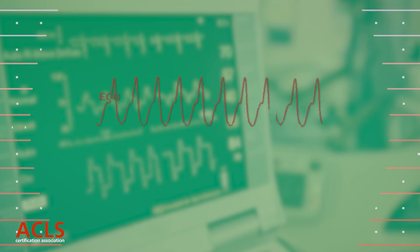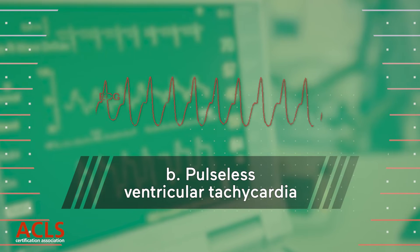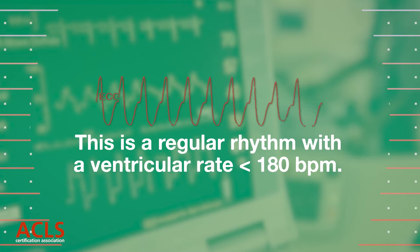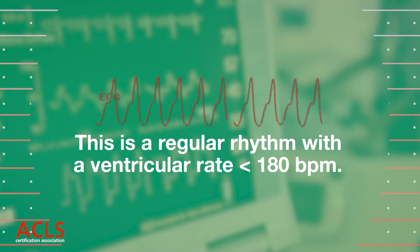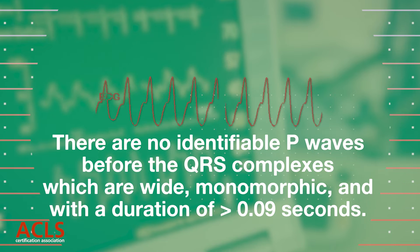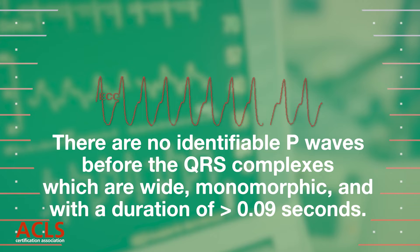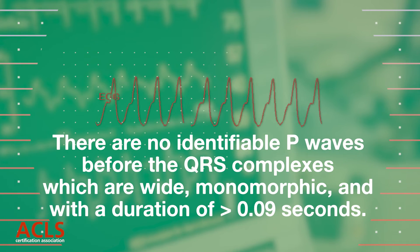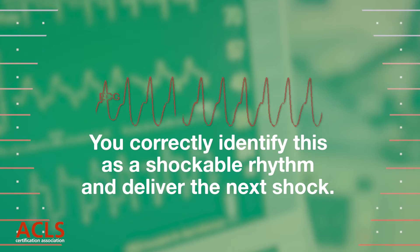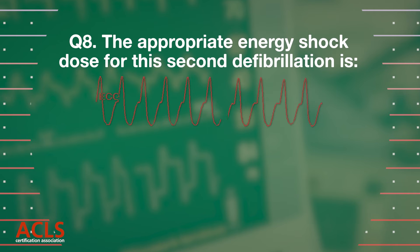Correct answer: B) Pulseless ventricular tachycardia. This is a regular rhythm with a ventricular rate less than 180 beats per minute. There are no identifiable P waves before the QRS complexes, which are wide, monomorphic, and with a duration greater than 0.09 seconds. You correctly identify this as a shockable rhythm and deliver the next shock.